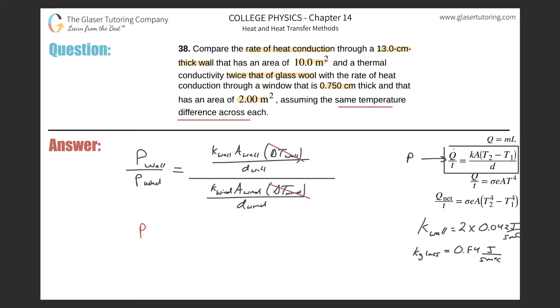So now if I were to calculate this, it's going to be the power of the wall relative to the power of the window. The thermal conductivity constant of the wall, they said it's going to be twice that of glass wool, so just take the glass wool value of 0.042, multiply it by 2, fairly straightforward. So this then becomes 0.084. The area they told us was 10 square meters.